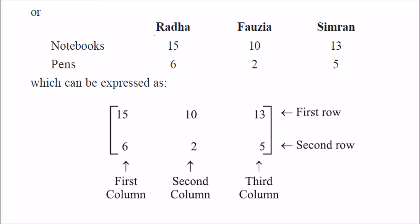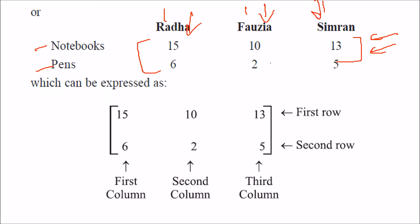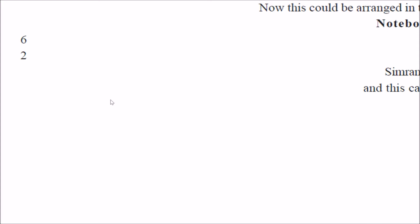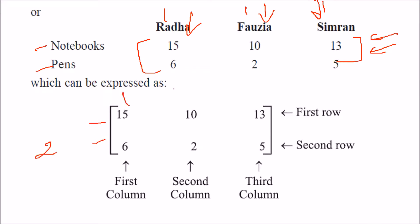We can also arrange it the other way: place notebooks and pens in the rows and Radha, Fauzia, Simran in the columns, again using a square bracket. In the first arrangement we had three rows and two columns; here we have two rows and three columns — similar information, different representation, but both give a clear idea in tabular form.